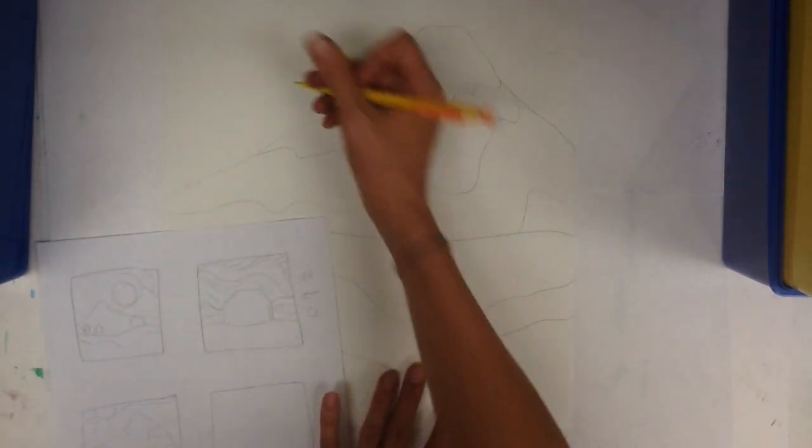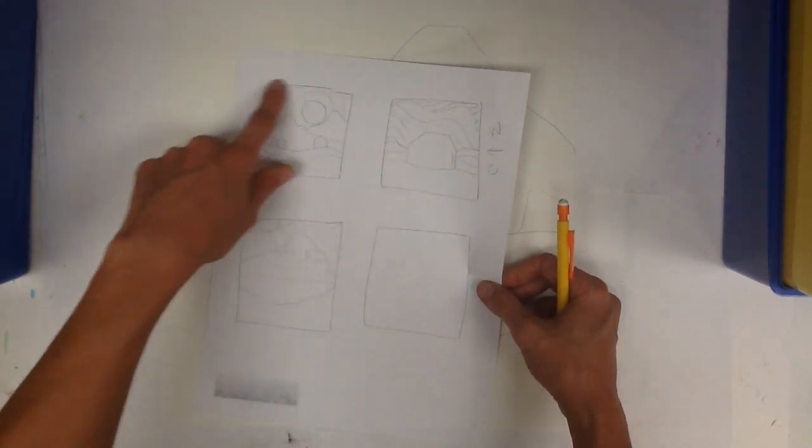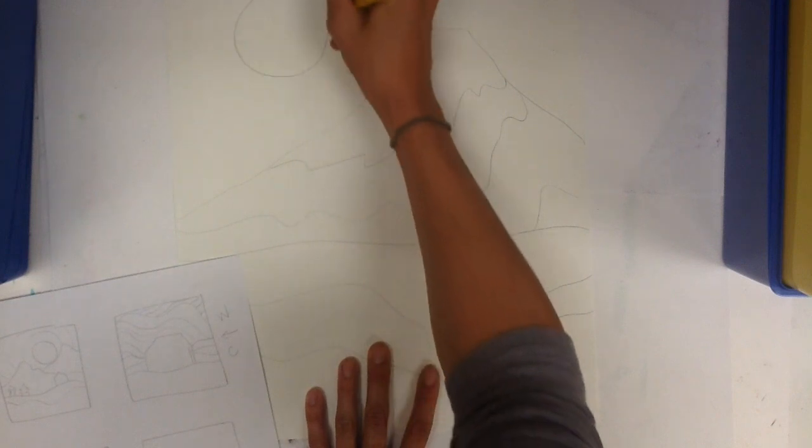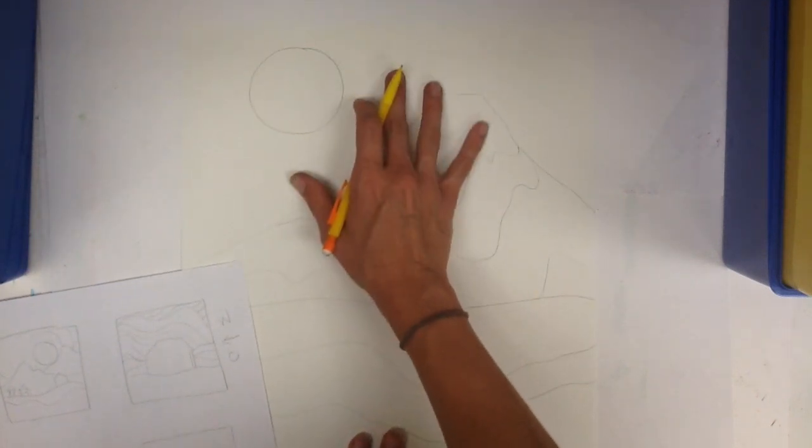Then I'm going to add my sun. And I'm going to change it because I like this design, but I like this sunshine. So I'm going to sort of combine them. You can also trace a cup to make a very round sun.